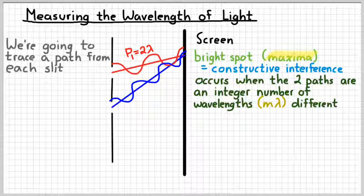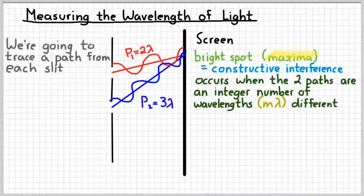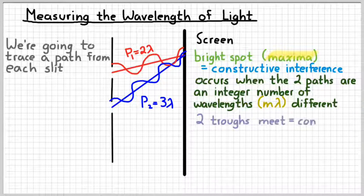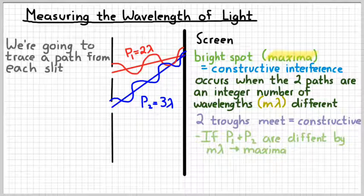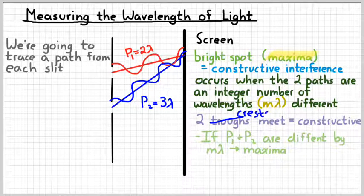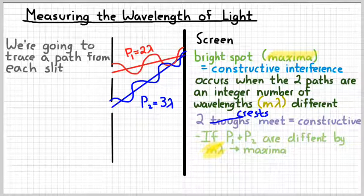If you draw the blue wave and count the waves, you get one, two, three waves — so P2, the length of the blue path, is three lambda. The way I've drawn it, when we get to the end we've got two crests meeting, which means we get constructive interference. The big idea is that if the difference between those two paths is equal to some integer number of wavelengths, then we would see a maximum.